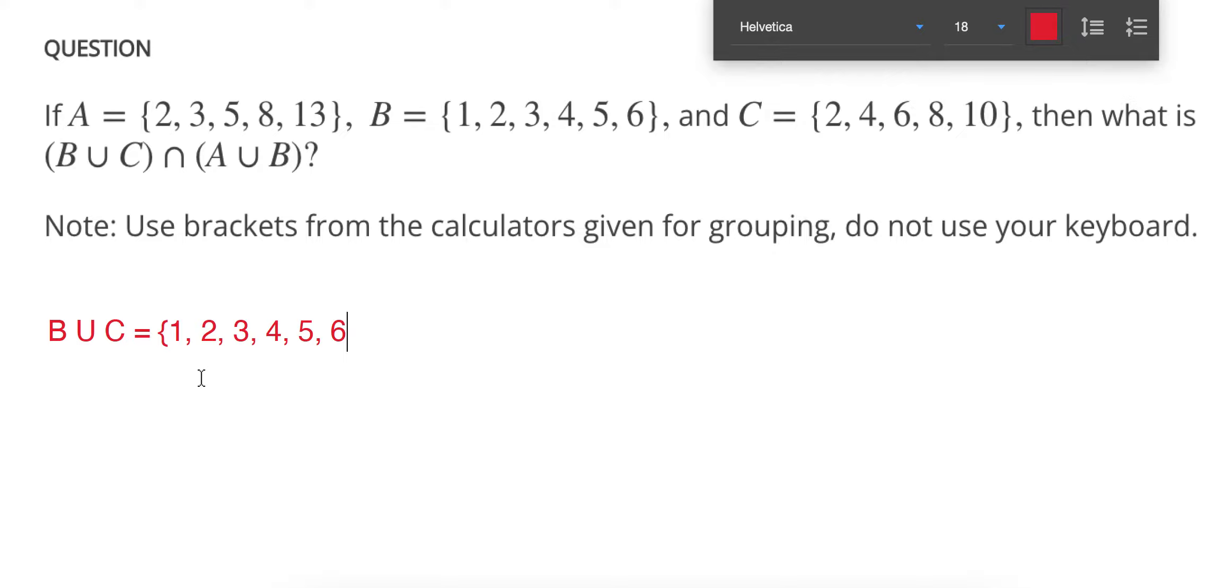It's not saying intersection, it's not only the ones that are together. It could be anything in set B or anything in set C. So when you see the or symbol, that means it's everything in the first one plus whatever you missed in the second one.